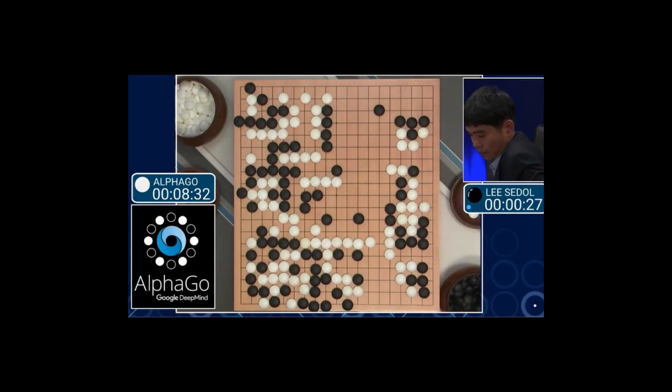Go used to be a game said to have too many possibilities for traditional computers to work out. Powerful machine learning models trained on huge data sets help computers gain the intuition to conquer Go. Now what about analog chip design?